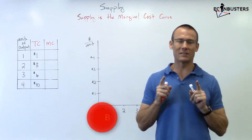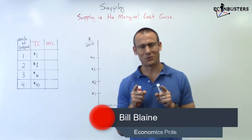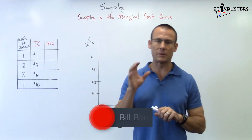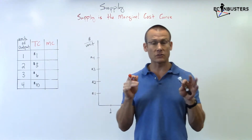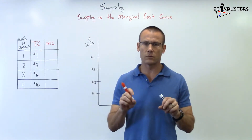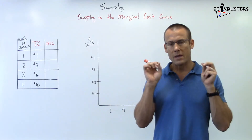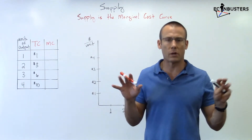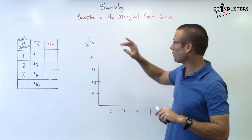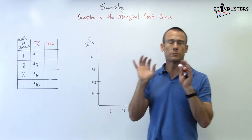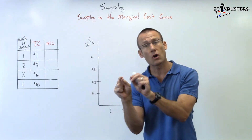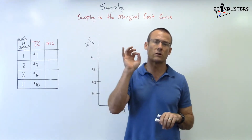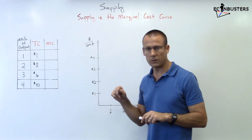Hey everybody, welcome back. We are on supply, and if you watch this whole video you are going to be in such great shape. It's going to get a little bit hairy — I'm going to be talking about independent and dependent variables. Stay with me through this whole video. This is one of those videos that can make your life in microeconomics so much easier. What this one is called is: supply is the marginal cost curve — or better put, the marginal cost curve gives us the supply curve.